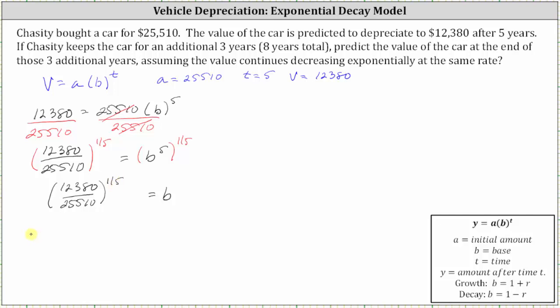Which means now we know the value v is equal to a, which is 25,510 times b, which we now know is 12,380 divided by 25,510 raised to the power of one-fifth. And all this is raised to the power of t. The reason I wrote it in this form here is because now we have powers raised to powers again, and therefore we multiply the exponents. One-fifth times t is equal to one-fifth t, or t divided by five. So now we have the equation v is equal to 25,510 times the base of 12,380 divided by 25,510 now raised to the power of t divided by five.